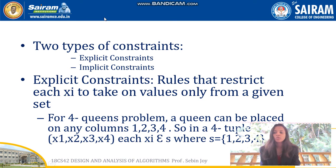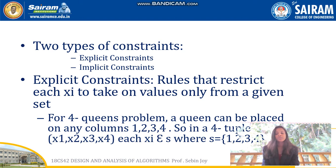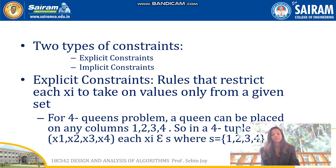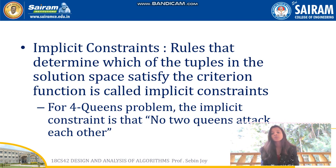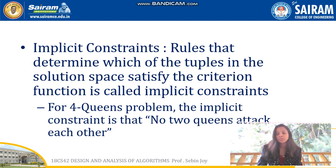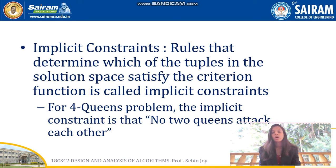For solving backtracking problems we have two types of constraints: explicit constraints and implicit constraints. Explicit constraints are rules that restrict each xi to take values only from a given set. For the four queens problem, each queen must be placed in one of the four columns 1, 2, 3, or 4 — so the set S = {1, 2, 3, 4}. Implicit constraints are rules that determine which tuples in the solution space satisfy the criterion function. For the four queens problem, the implicit constraint is that no two queens attack each other.